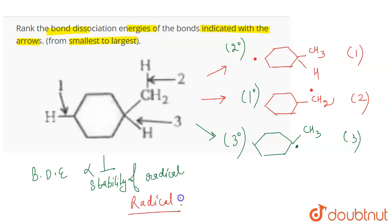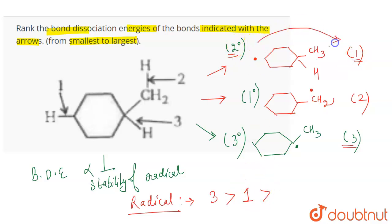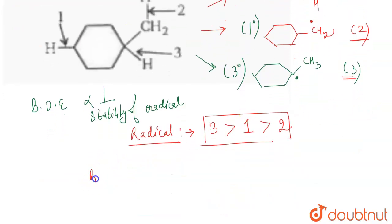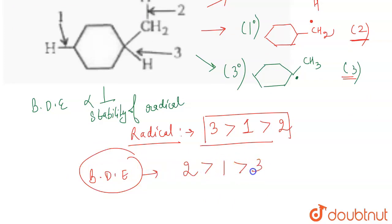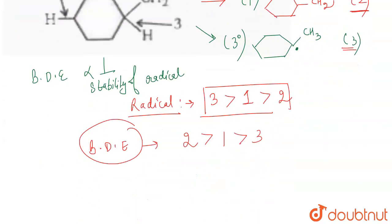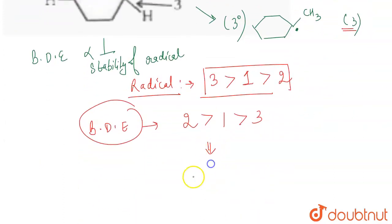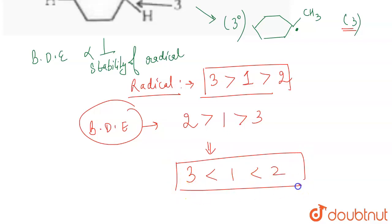In terms of radical stability, the tertiary (3°) radical is most stable — formed when bond three breaks. Then the secondary (2°) radical when bond one breaks, and then the primary (1°) when bond two breaks. Since bond dissociation energy is inversely related to radical stability, the order of BDE from smallest to largest is: bond three, bond one, bond two.